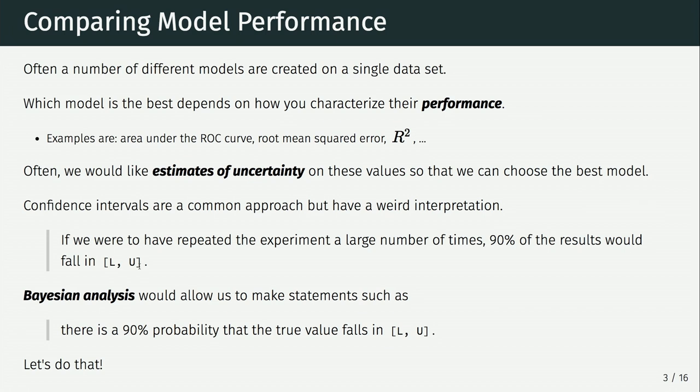Compounded with that is the traditional frequentist or non-Bayesian approach, which would be to put a confidence interval on these numbers. And I just want to remind everybody what a confidence interval actually is: if you were to have repeated this experiment in some alternate reality a thousand times, a 90% confidence interval means 90% of those times the value would fall between these two numbers. Try telling that to a scientist — they're like, what are you talking about? And that's not really what we care about.